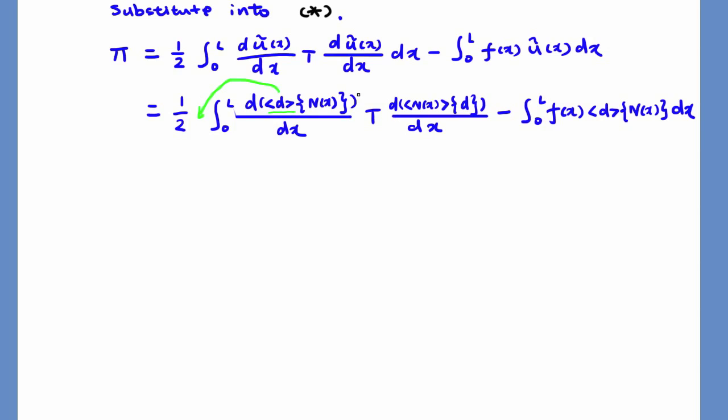Now, let's take out the row d to the front of the integration and column d to the back. We can do this because nodal values do not depend on x. The purpose of doing this is to write the potential energy pi into the standard quadratic form, half of dKd minus dR.